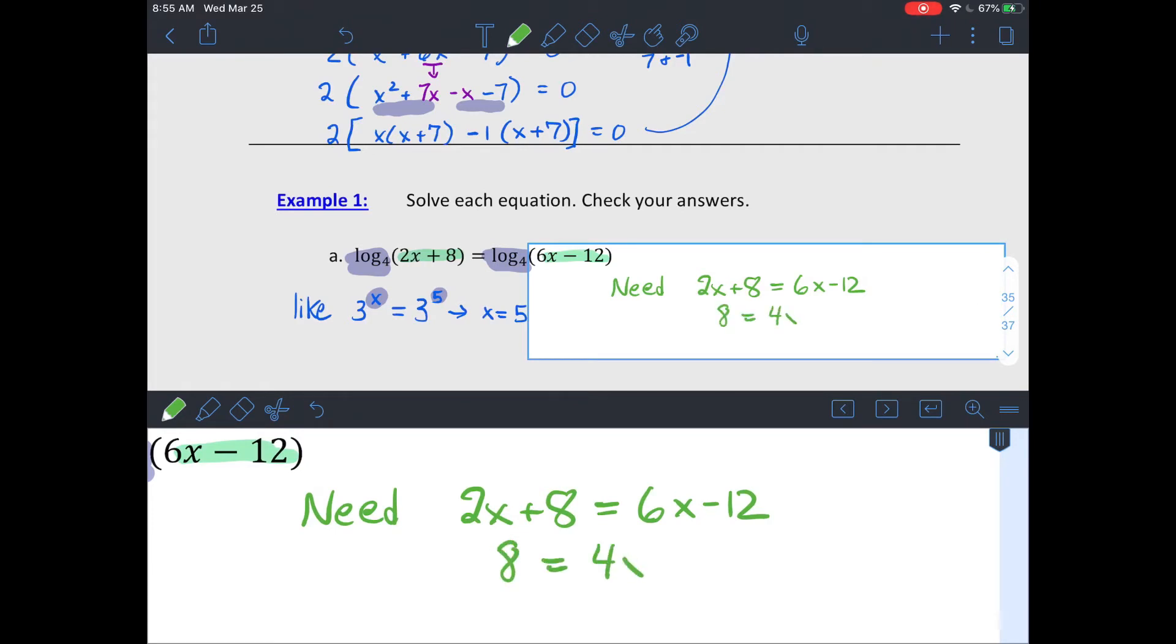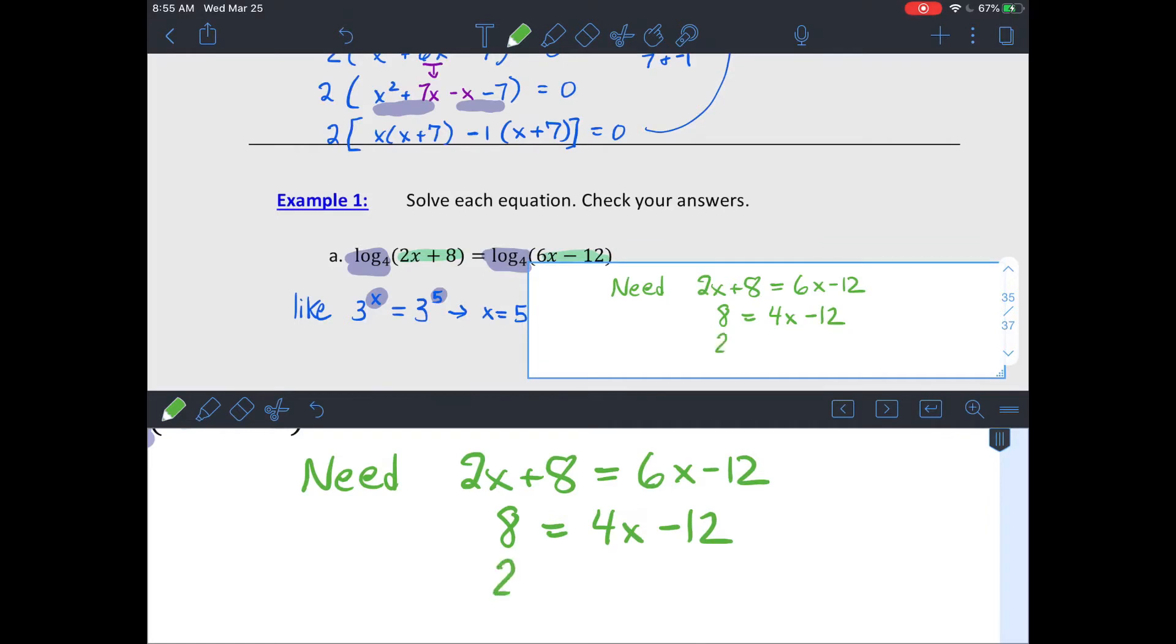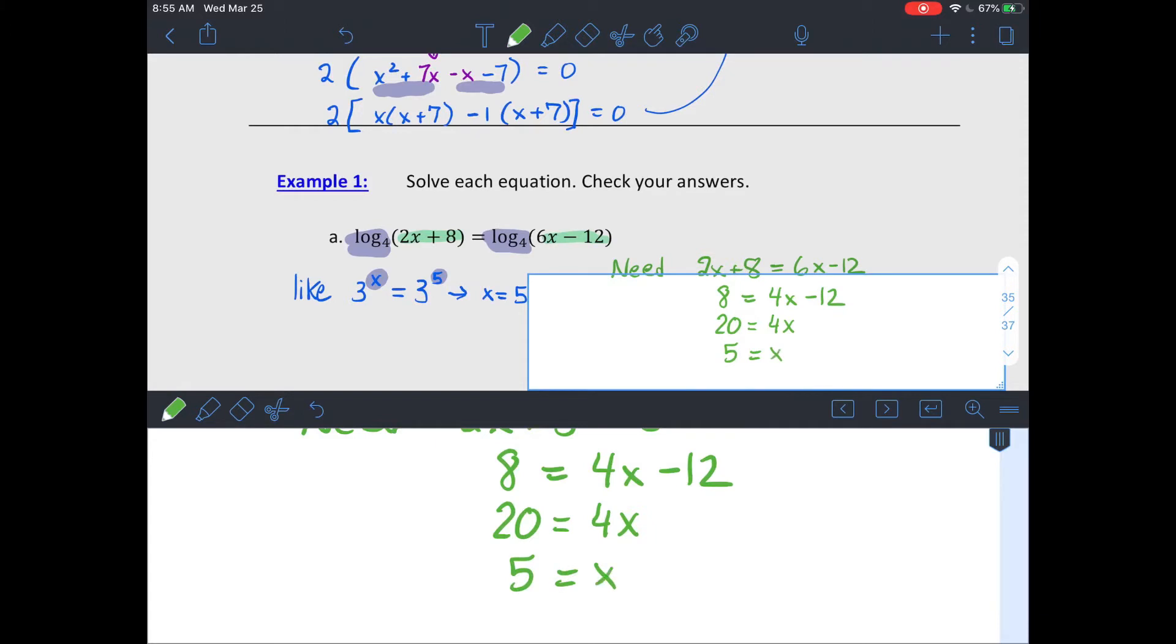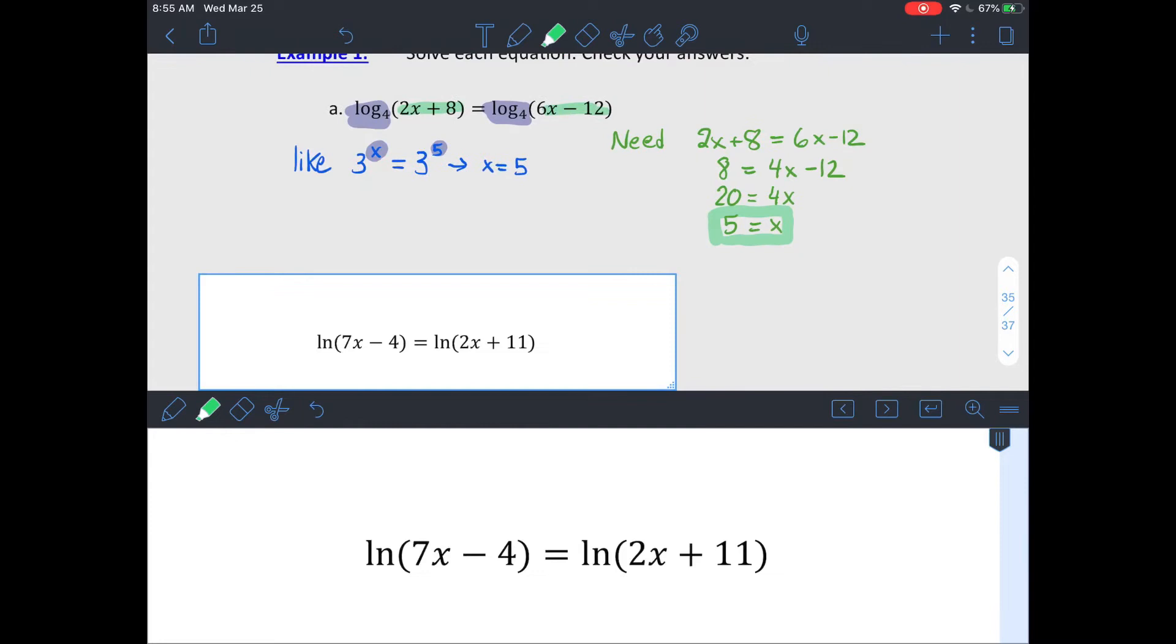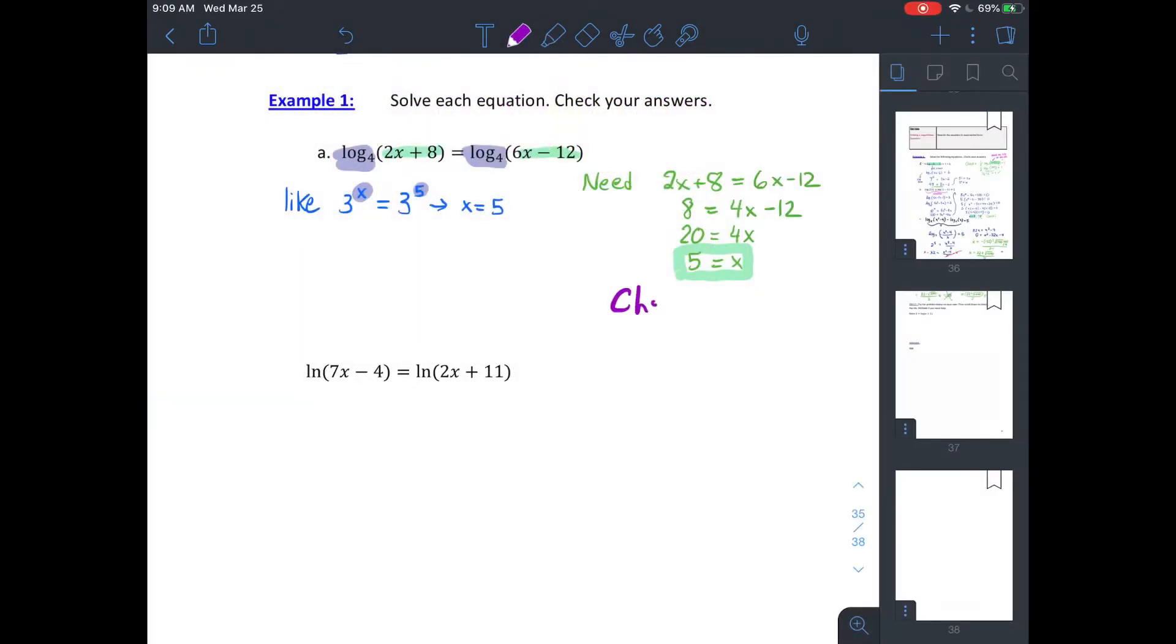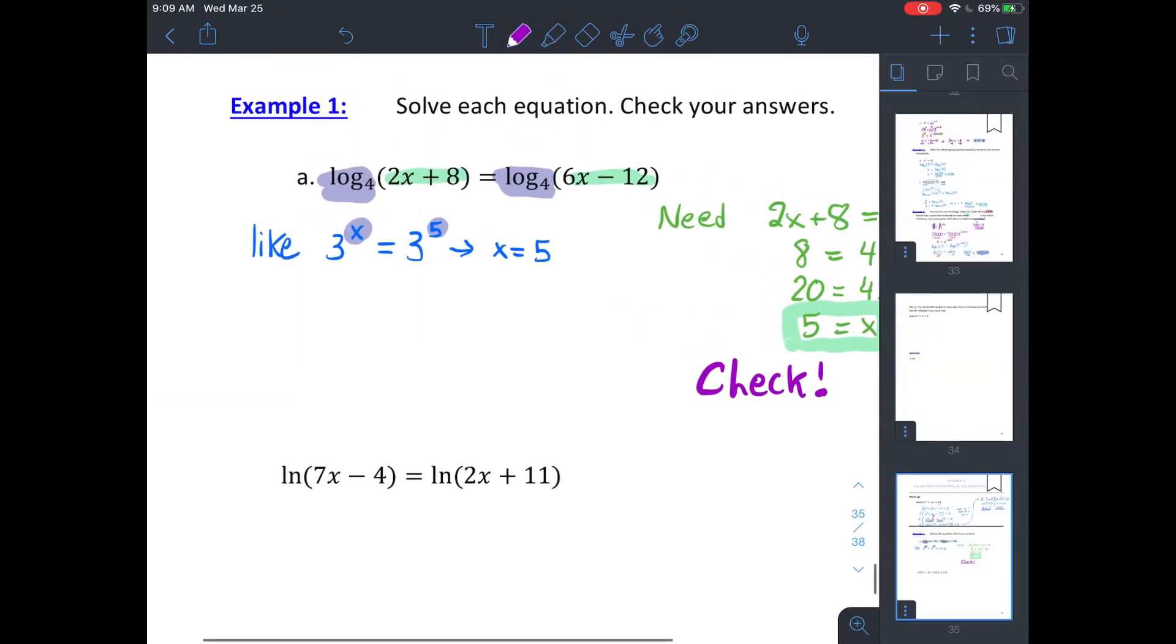So if you subtract 2x from both sides and then add 12 to both sides, you're gonna have 4x equals 20, divide by 4, you end up with x equals 5. You do need to check these because if you try it and plug it back in, it has to not only make both sides equal, but it has to give you a positive value inside of your logarithms. So if I try these, I get 18 inside both my logarithms, so both sides are the same. And also, that's greater than 0 because logarithms are only defined for positive numbers.